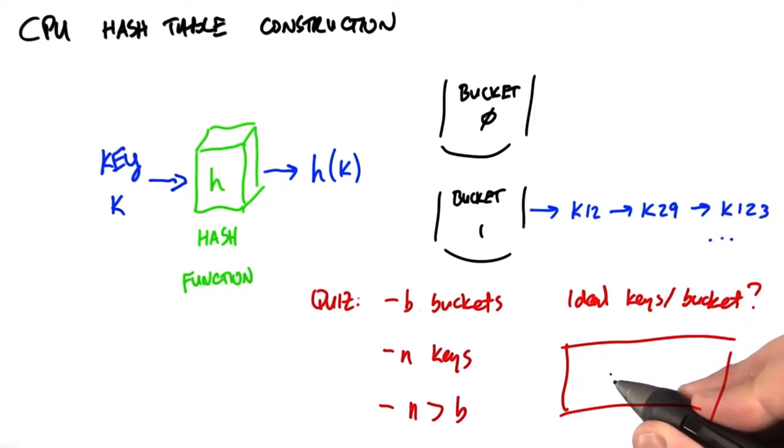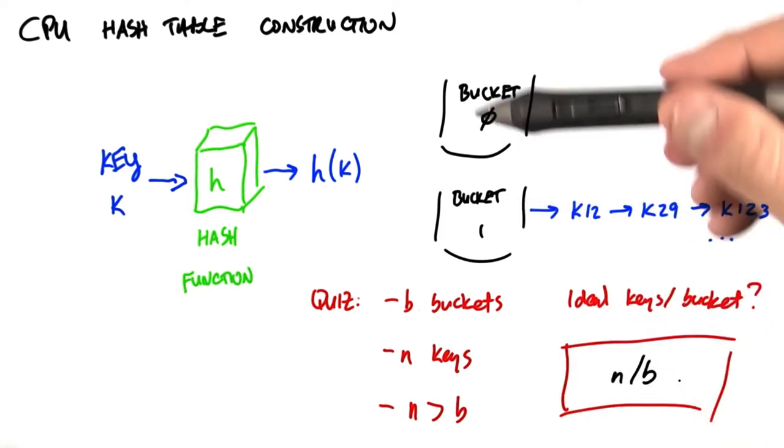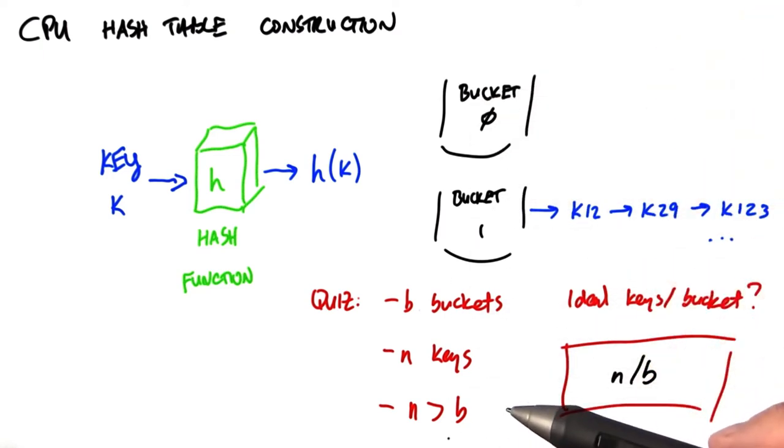The ideal number of keys per bucket is simply n over b. If every bucket has n over b items, then the items are all evenly spread between buckets.